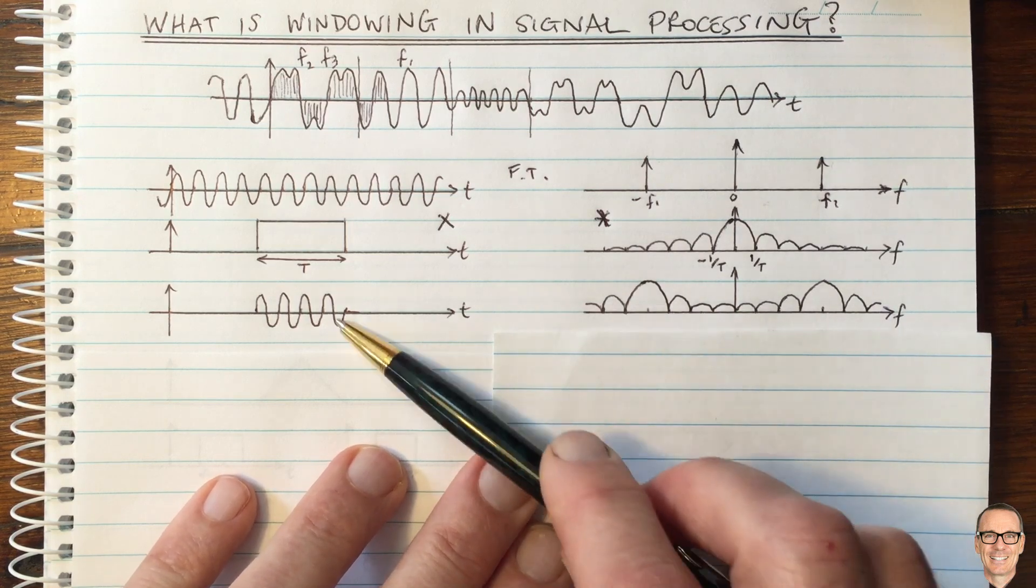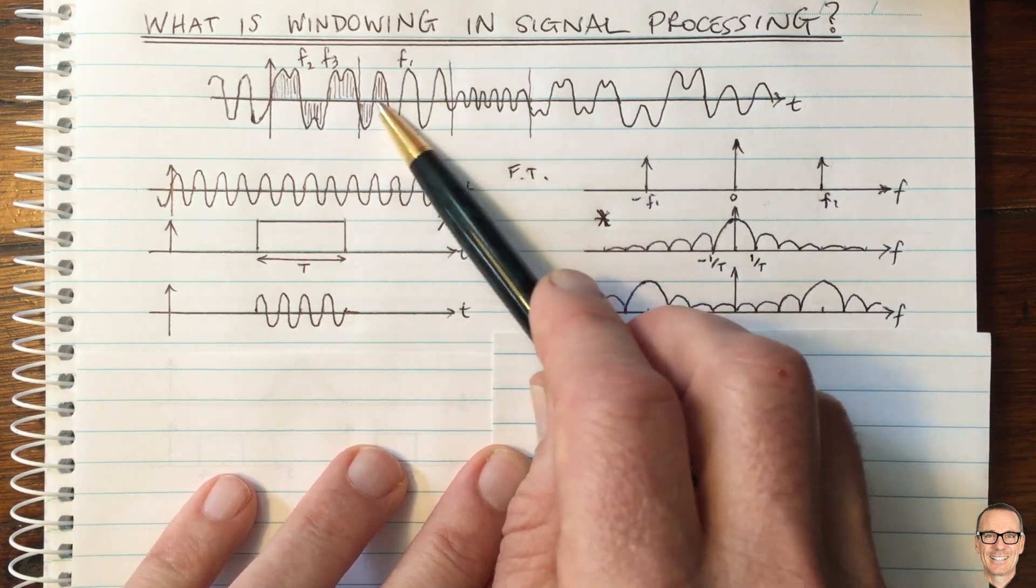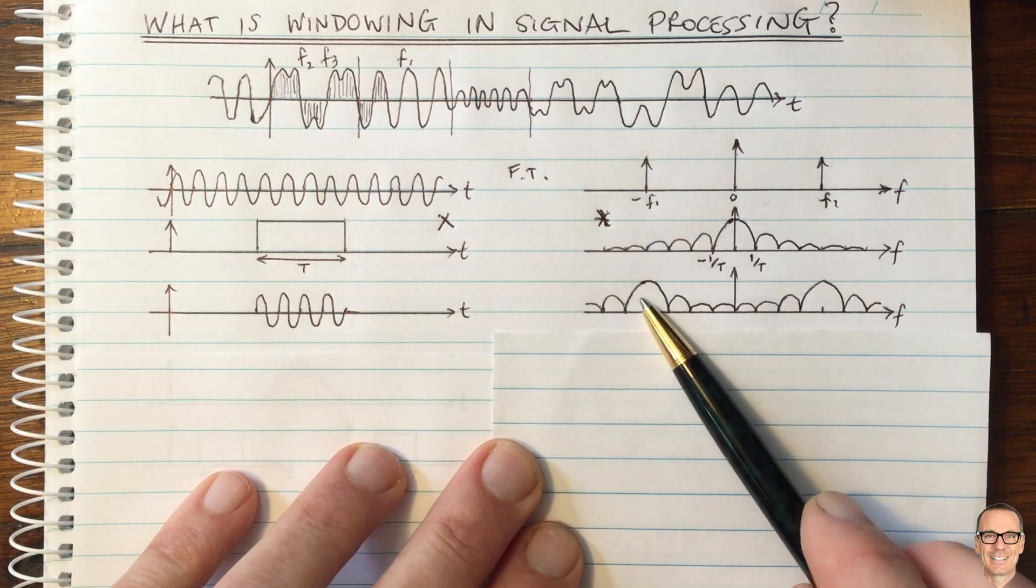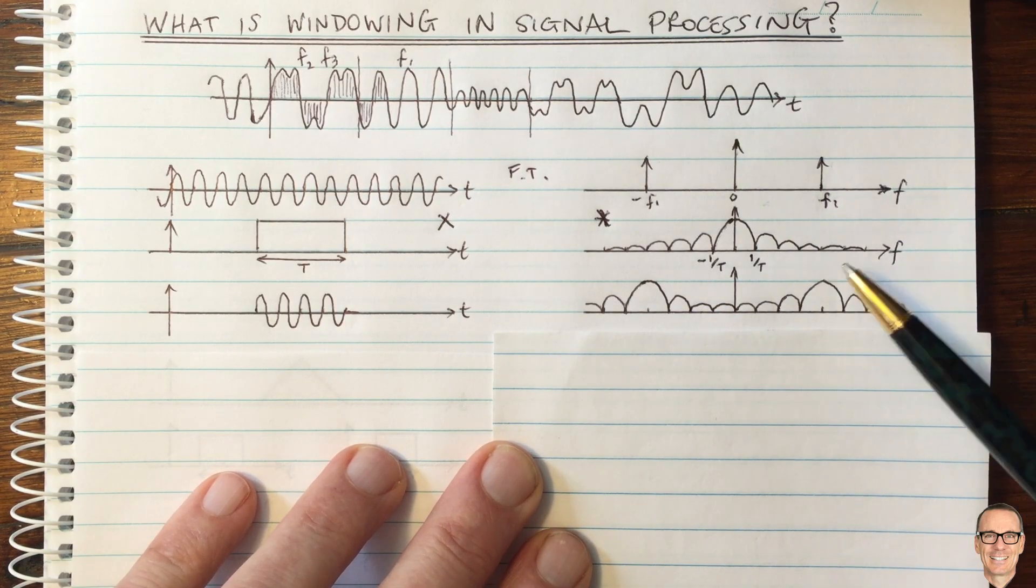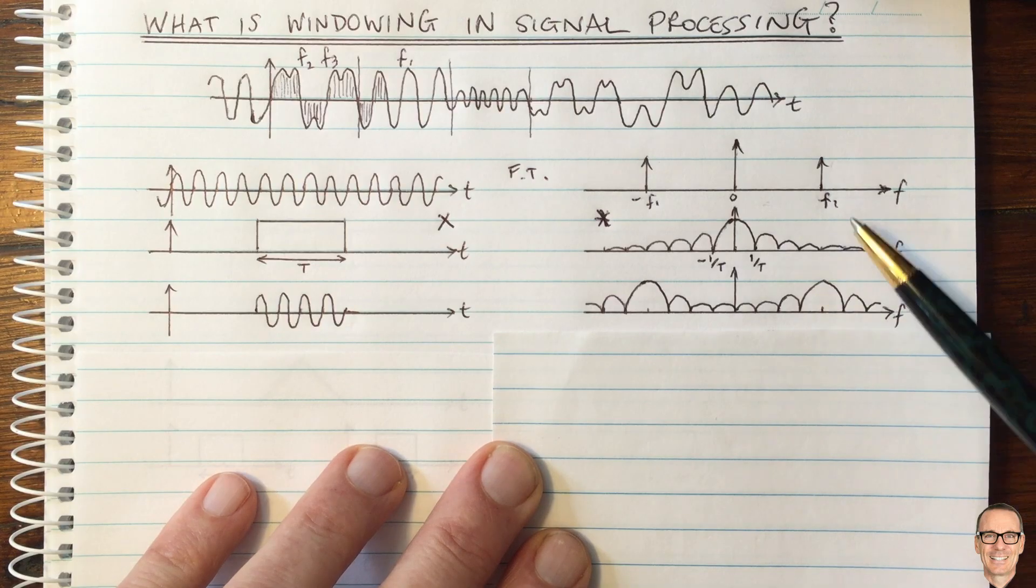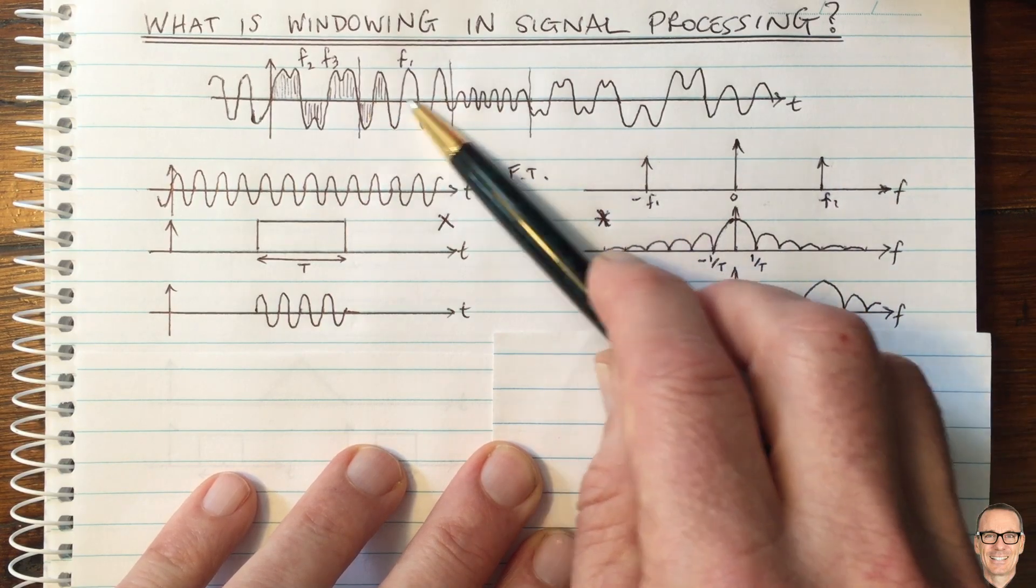Now, if this is the only frequency that exists, so for example, in this time period here, then it's not going to be too hard for us to work out where the peak in this Fourier transform is, and we will get the right answer. We'll get the F1 and we can record that and do our compression.